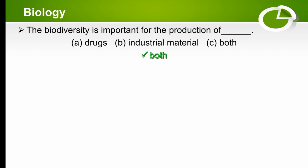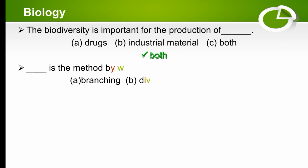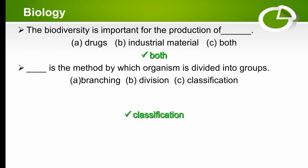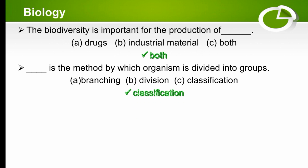The next MCQ is like a definition: dash is the method by which organisms are divided into groups — the options are branching, division, or classification. The right option is classification. Classification is the method by which organisms are divided into groups.